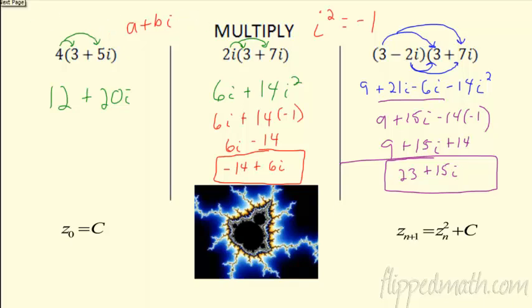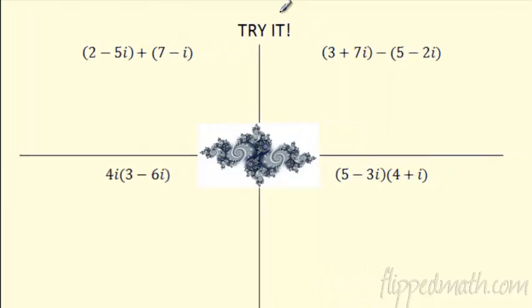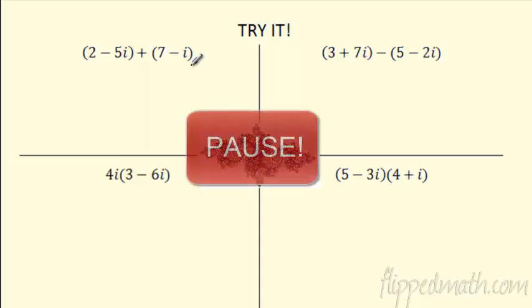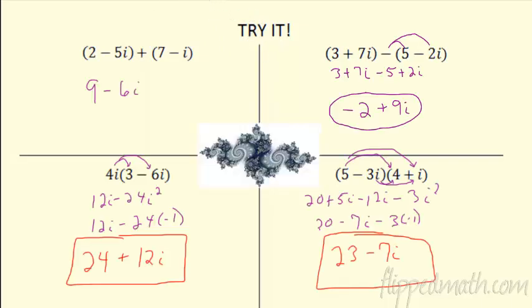We have done multiplication — so we've done add, subtract, and multiply. Try these. Pause it, make sure you can get these. I'm going to post the answers and then we'll see how you did. Good luck. All right, here they are. Hopefully your answers match up. Just be careful with that i squared — make sure you're making it negative 1. It simplifies down to those. Awesome. Moving on.